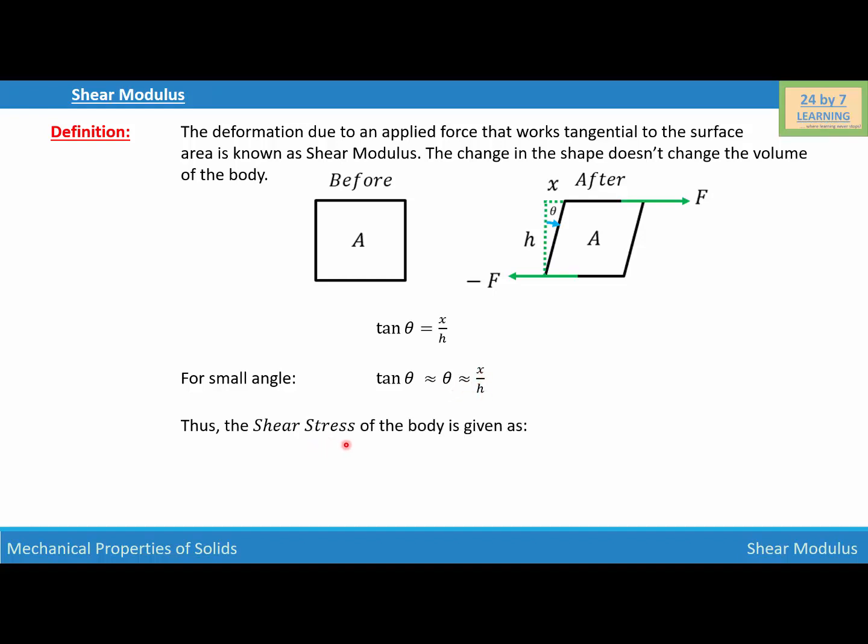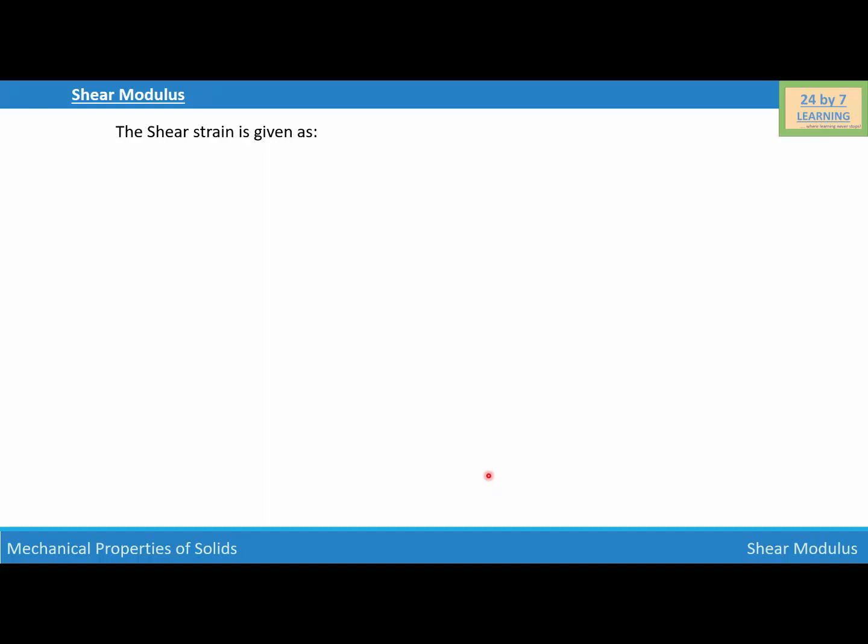Now we know that the shear stress of a body is given as shear stress is equal to F over A, and the shear strain is given as shear strain is equal to x over h, and this is basically tan θ of the angle. Now let's find the shear modulus.